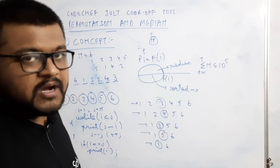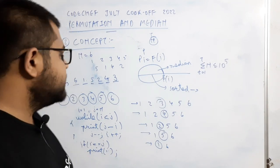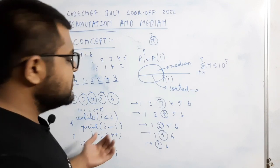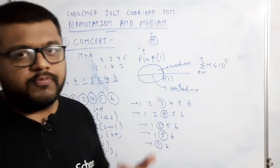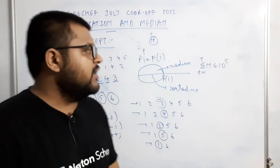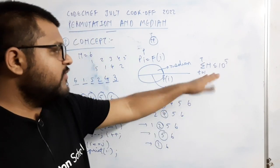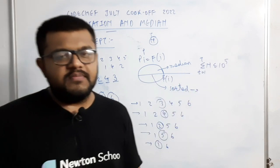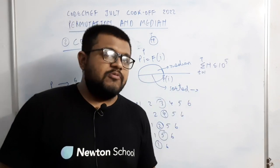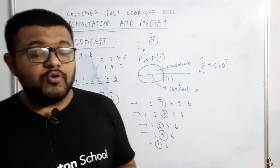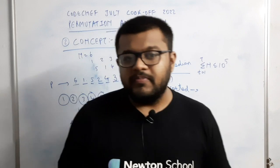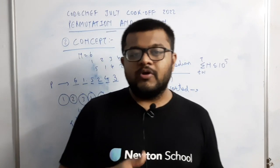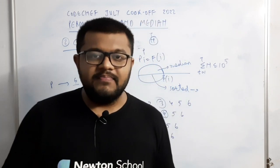Is tarah se odd wala case bhi cover ho jaega. Time complexity kya hogi? Ek loop run kar rahe hain n size ka so O(n), aur summation of n over all test cases 10^5 se kam hai, so given time limit mein easily ho jaega. I hope question, concept, aur implementation clear hai.